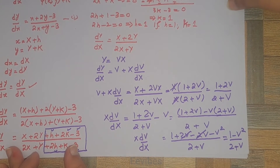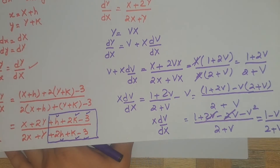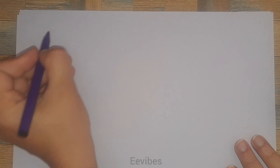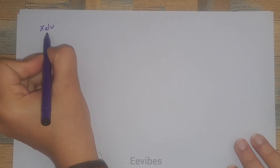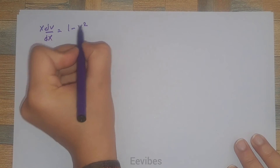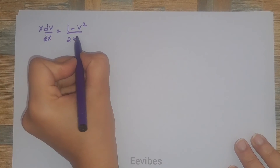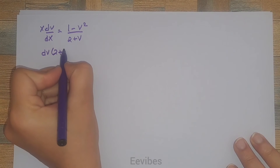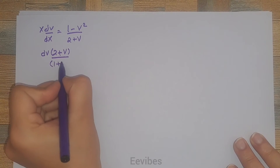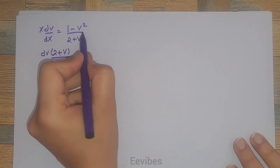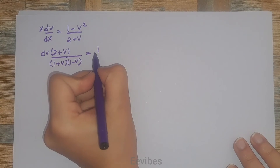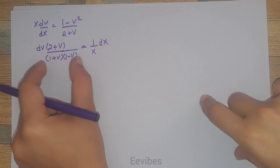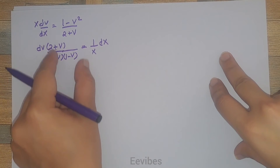Now let's separate the variables by taking differentials of the same variable to one side. From X·dv/dX = (1 − v²)/(2 + v), we rearrange to get (2 + v)/[(1 + v)(1 − v)] dv = (1/X) dX, since 1 − v² = (1 + v)(1 − v). Before integrating we need to apply partial fractions to split this term.